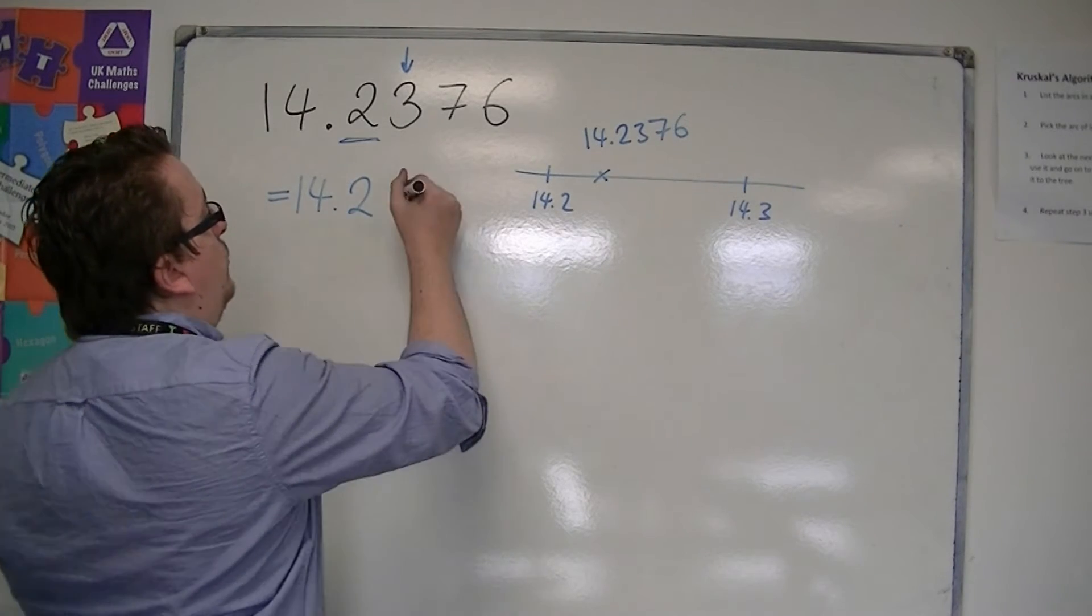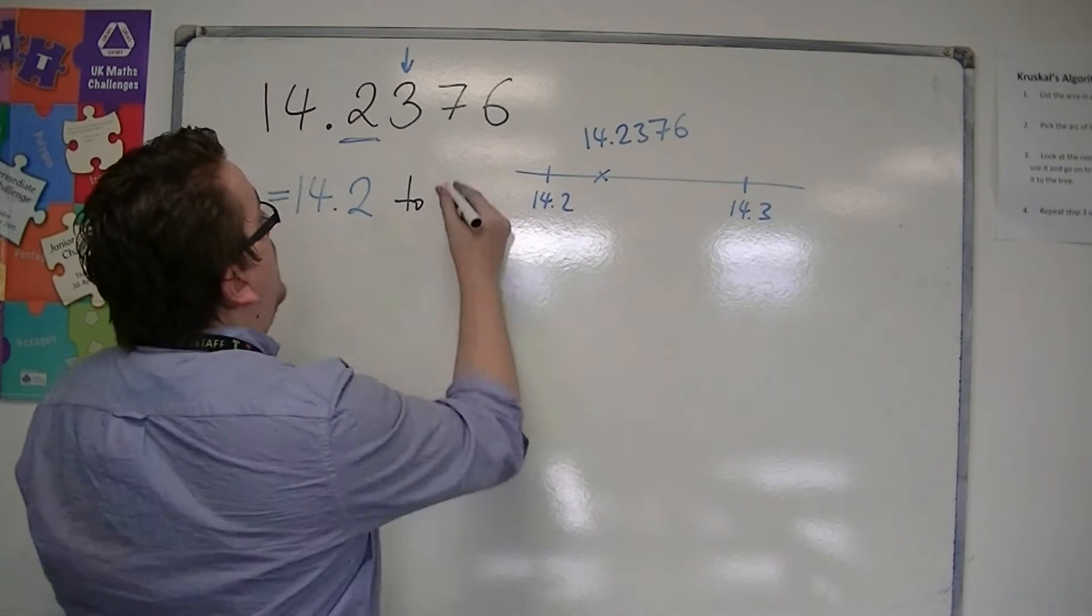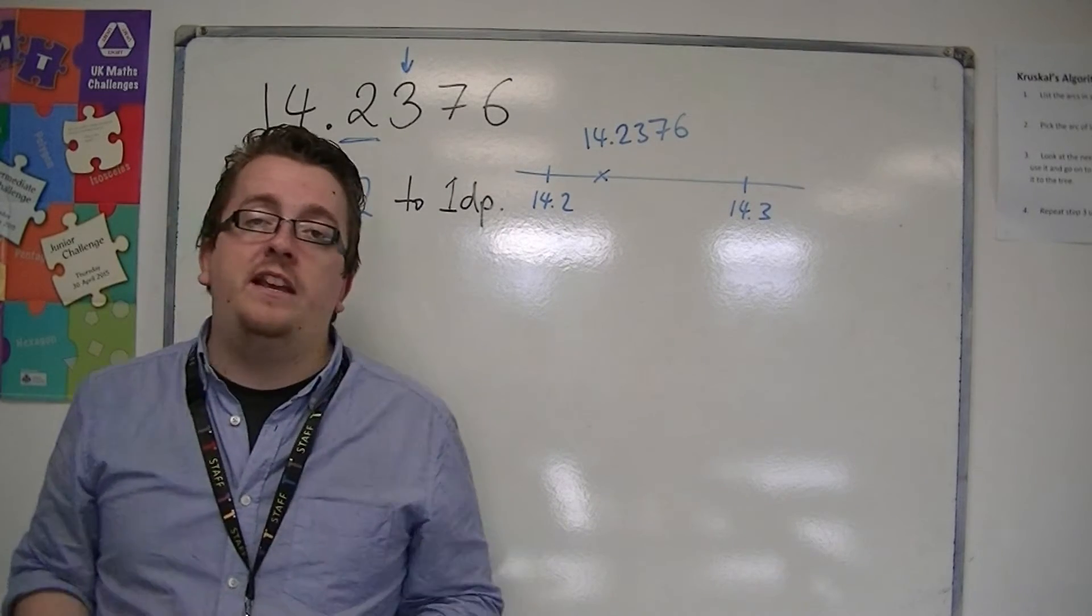And because we don't want to write to one decimal place in full words, we write to one dp. The dp representing decimal place.